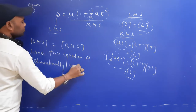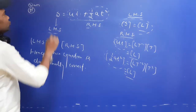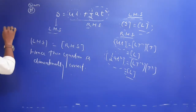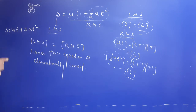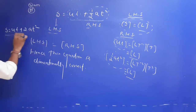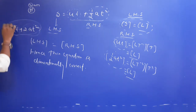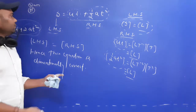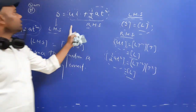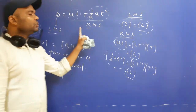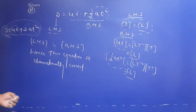Hence, this equation is dimensionally correct. I am not saying this equation is always physically correct — for example, if you write S equals uT plus 2aT², that equation is not correct, but dimensionally it would still be correct. That is why we use this method only to check dimensional correctness.